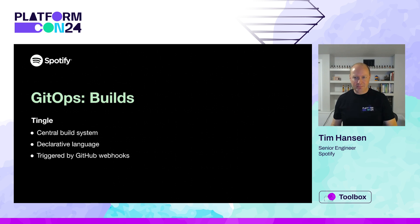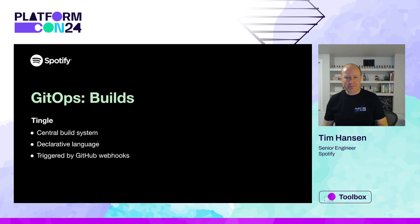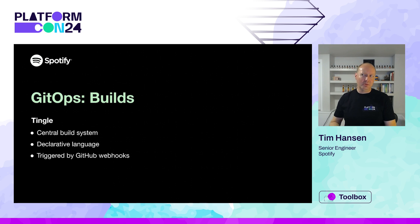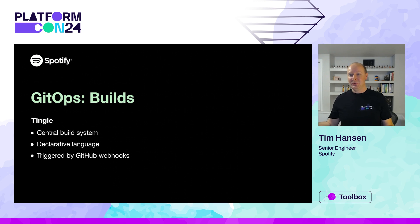Let's start with builds. The build system is the starting point of GitOps — this is where the process is kicked off. We have a central build system at Spotify called Tingle. It's a custom system, but it's very similar to GitHub Actions that came out later. Most interestingly, it has a declarative pipeline language. The desired state of our build is stored declaratively, and it's stored in Git, so it's versioned and immutable. And lastly, changes must be applied automatically — Tingle uses GitHub webhooks to trigger builds automatically.